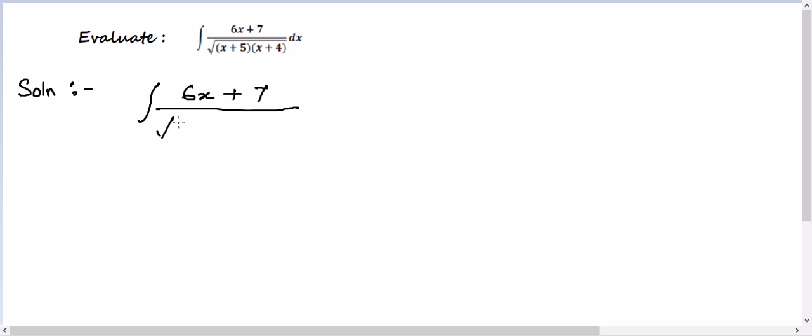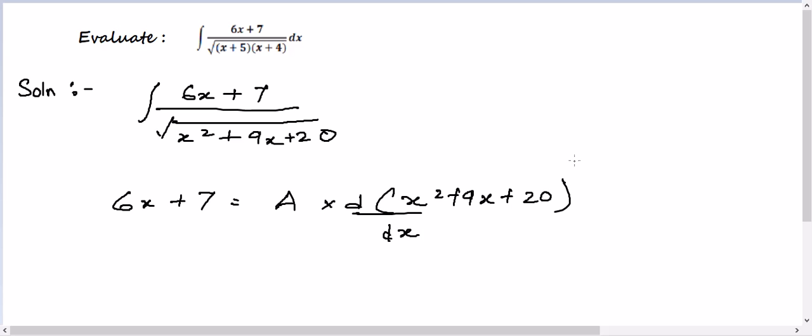What we gonna do then? Let me write it like this. 9x plus 20. So now we'll use this method where we can write the numerator 6x plus 7 as a constant into differential of the denominator plus b again.